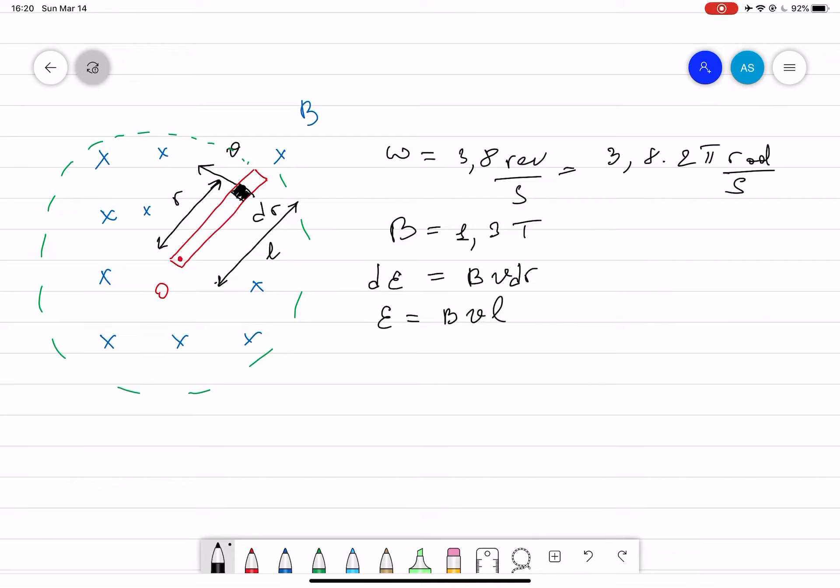v is equal to omega r. To find the total EMF, you integrate B omega r dr, which equals B omega times r²/2.